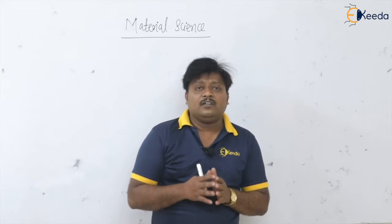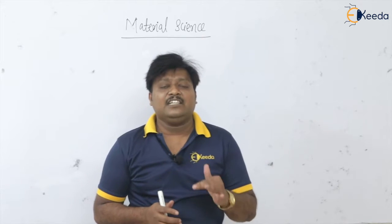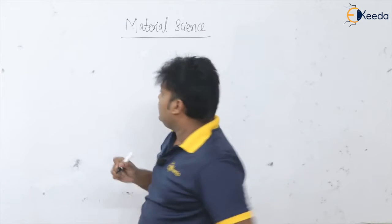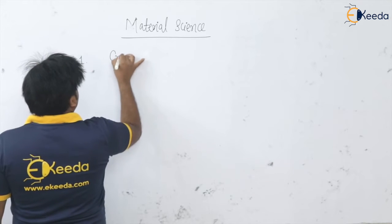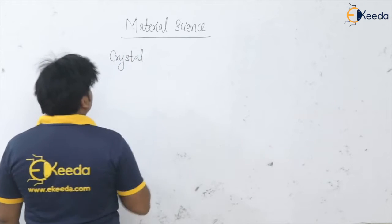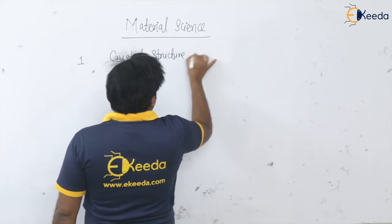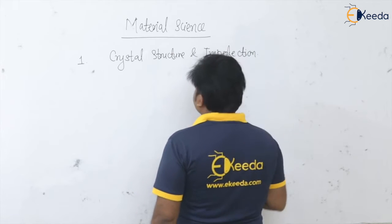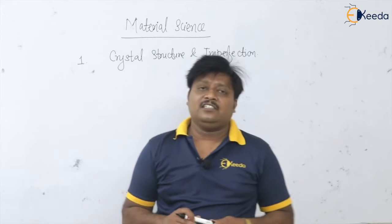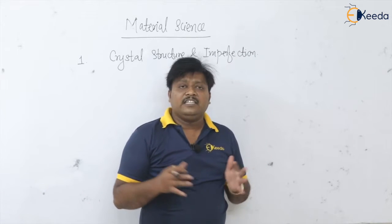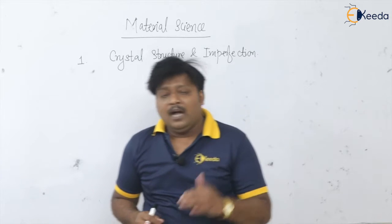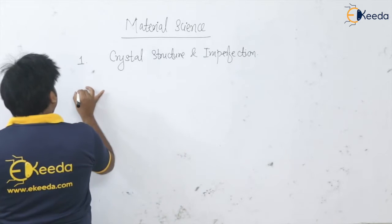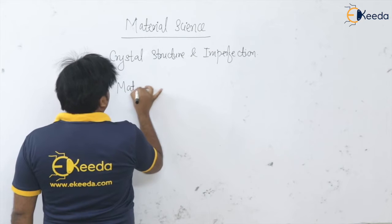In this subject, as far as mechanical engineering is concerned, which topics are there from the GATE point of view? The subject starts with the first topic: crystal structure or the structure of materials, crystal structure and imperfection. This is a very basic topic of the subject, and we are going to see its introduction in this same video.